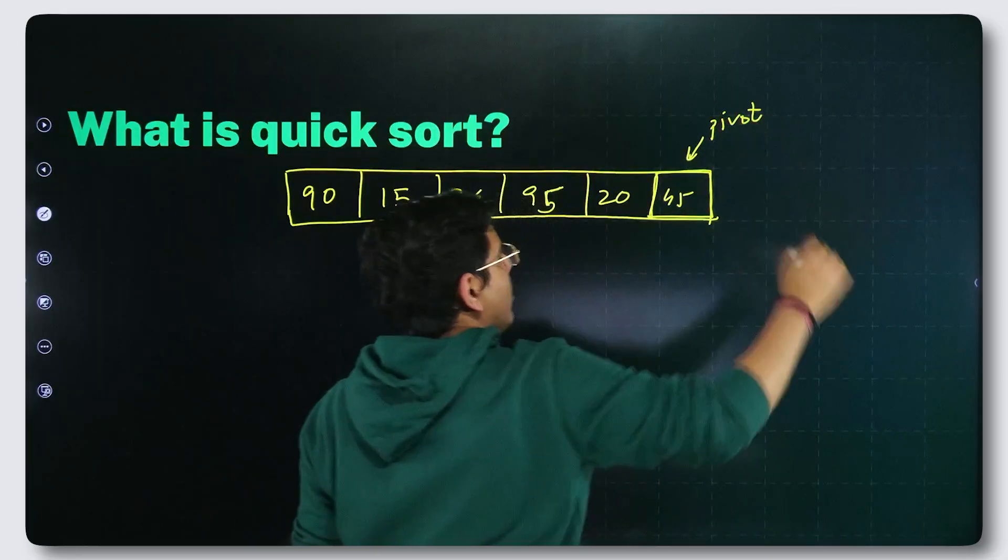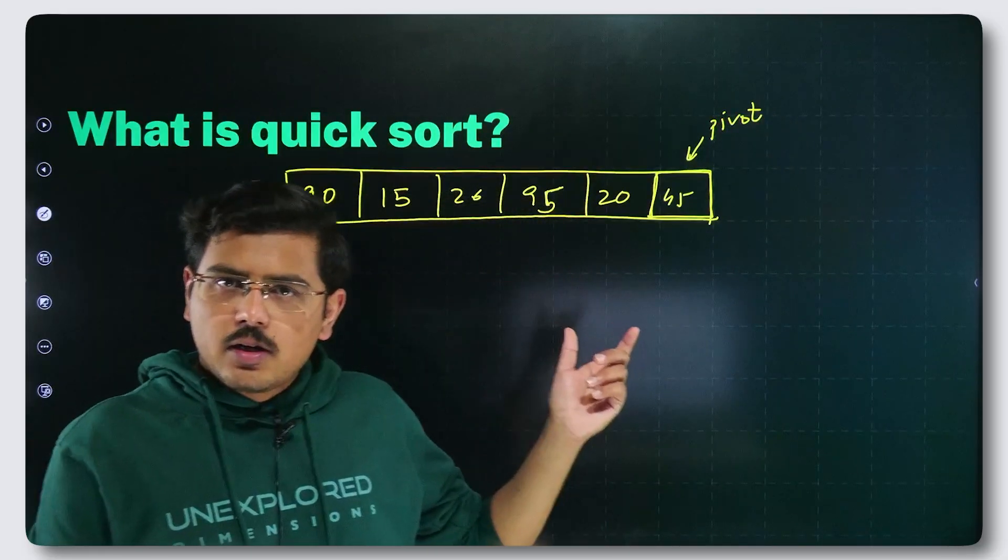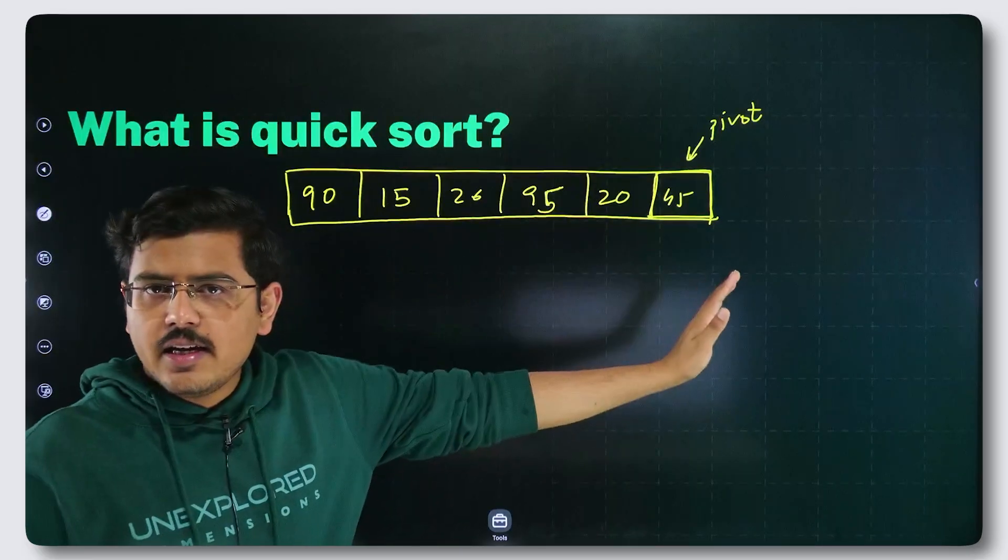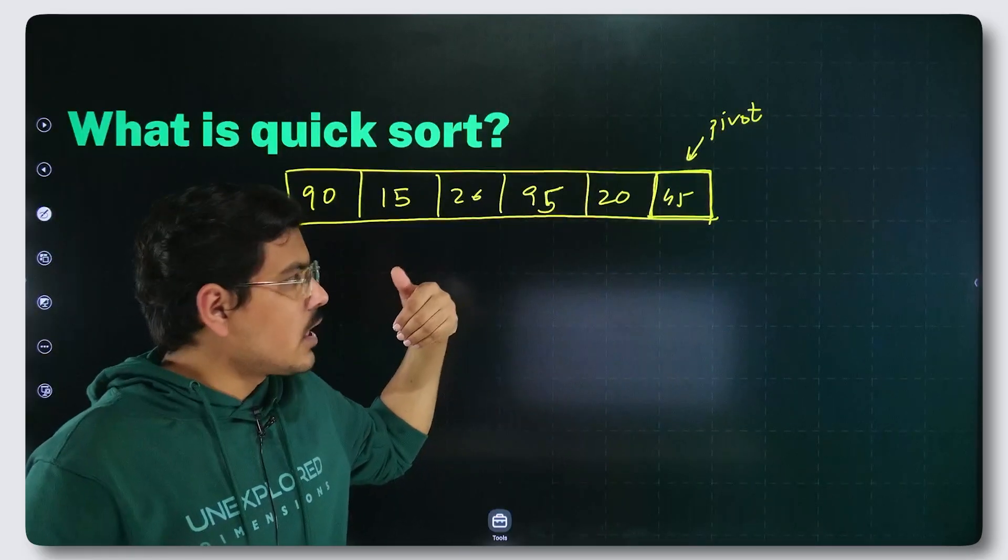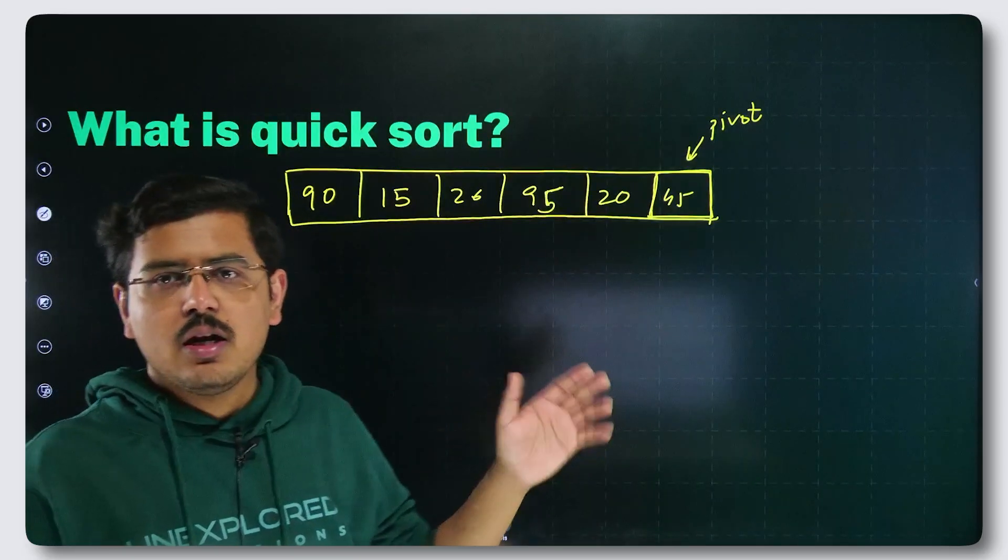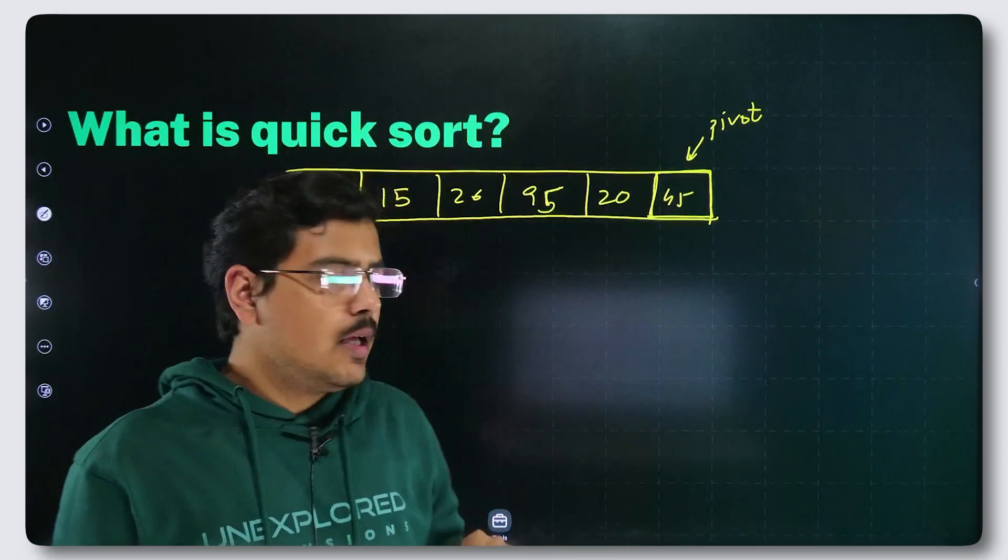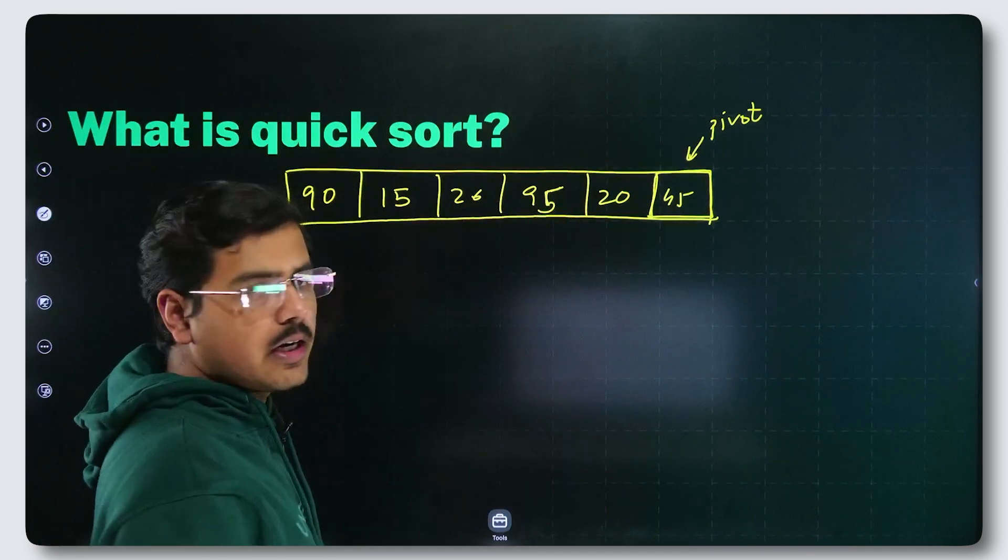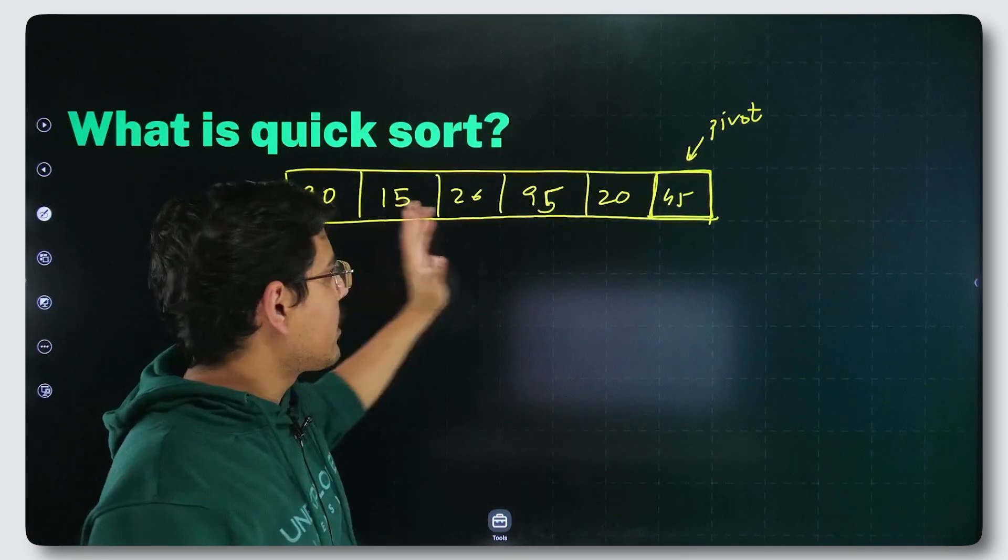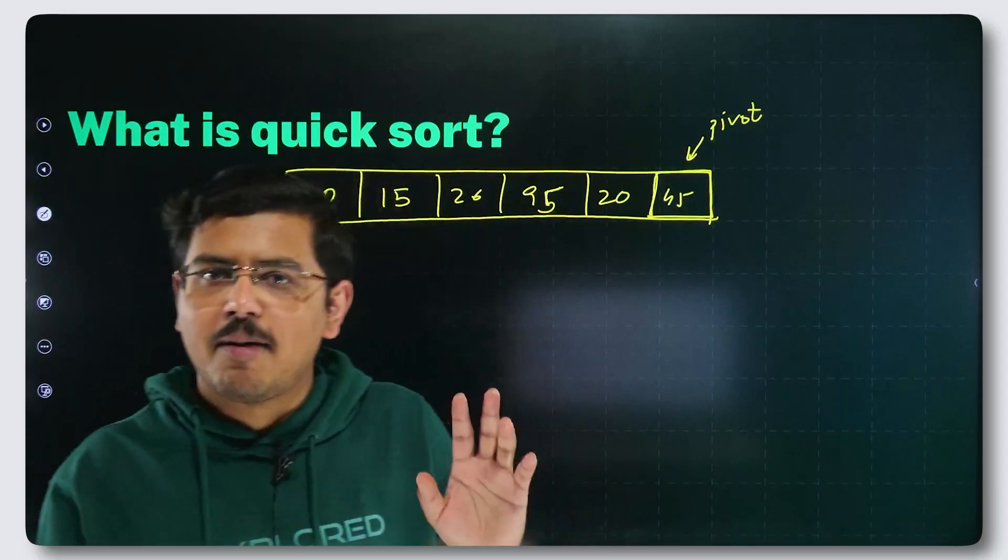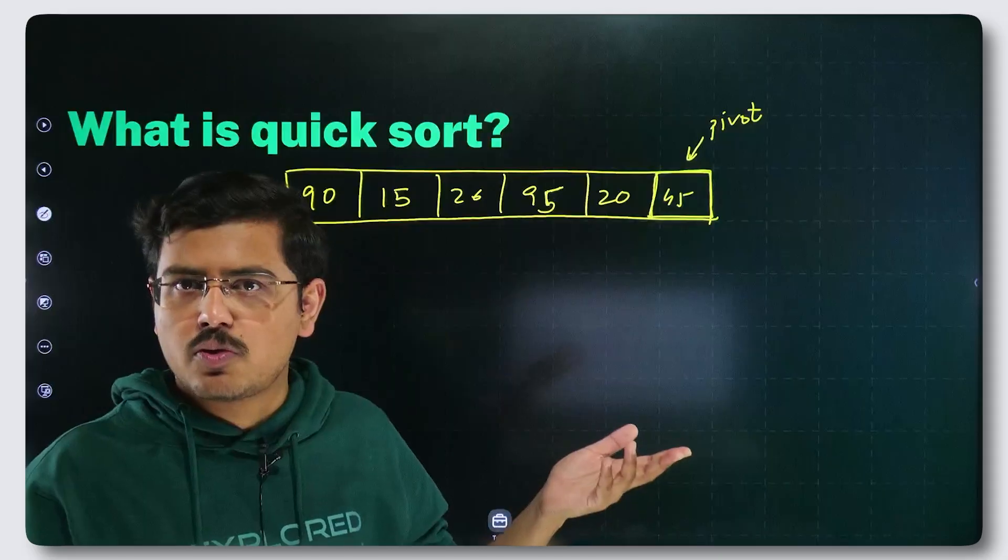What I will do now, with respect to this pivot, I will keep it at its right place. On the right hand side of pivot, there would be elements which are greater than pivot. On the left hand side of the pivot, there would be elements which are smaller than pivot. But you cannot randomly collect 15, 26, 20, put on the left side of 45 and then collect 90, 95, put randomly on the right side of the pivot. This cannot happen. This does not happen in actual quicksort code implementation.